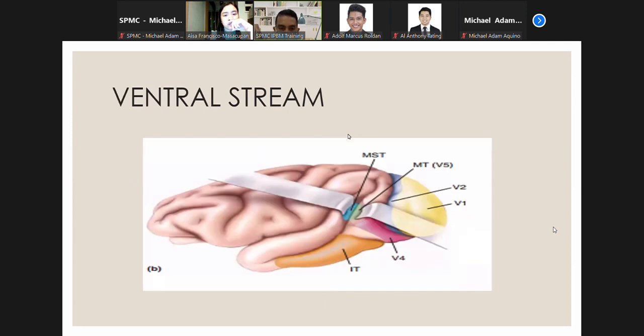The ventral stream: One of the most studied areas in the ventral stream is area V4. V4 receives input from the blob and interblob regions of the striate cortex via relay in V2. Many of the cells are orientation selective and color selective.